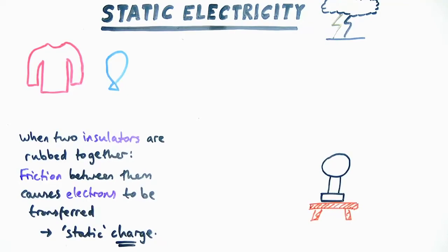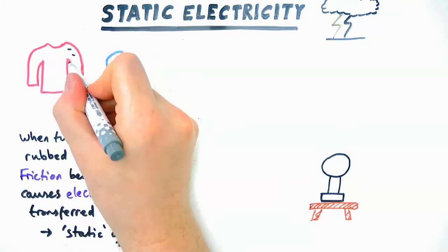Now, this is what forms what's called static charge, an object being charged with static electricity.